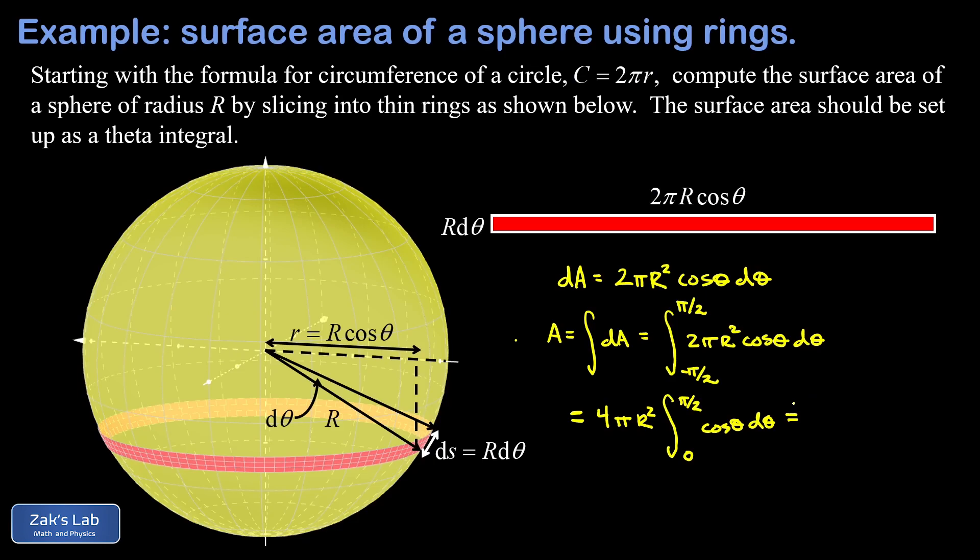Just to talk about that symmetry trick in a more practical way, all we're saying is that we can take the surface area of the upper half of the sphere, that's zero to pi over two, and then double the result. That's another way of looking at where the factor of two came from.